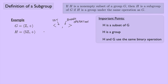Let H be 5Z under addition. 5Z is the set of all things that look like 5n, where n is an integer. To write a few elements out, this would be: ..., -10, -5, 0, 5, 10, and so on. The question is: is H a subgroup? We have to check the three important points.